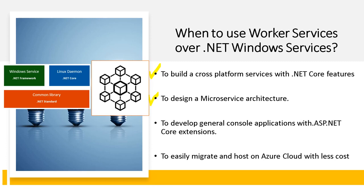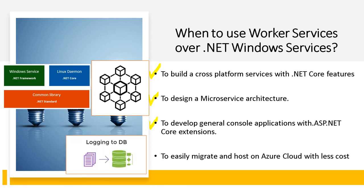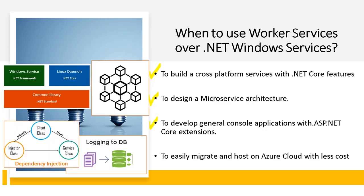Another use case is if you want to develop a general console application with ASP.NET Core extensions such as configuration, logging, and dependency injection — you can use .NET Core Worker Services. You don't need to build cross-cutting components like logging from scratch; you can simply inherit those features. Similarly, dependency injection, the code pattern that helps you build loosely coupled architecture, is available without spending much time on one-time setup.